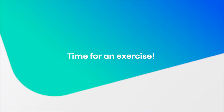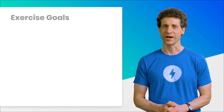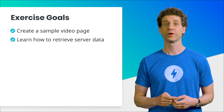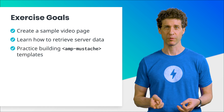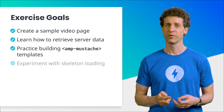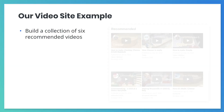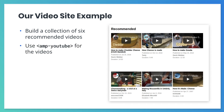To start working with amp-list, let's recreate a typical section of a video site — the recommended video section. In this exercise, we will create a sample video page containing a collection of recommended videos, learn how to retrieve server data using amp-list, and practice building amp-mustache templates. We'll also learn how to use skeleton loading. Our video site example is going to show one group of six recommended videos. We'll use the AMP YouTube component to display them, and while our site is contacting the server to retrieve the data on these videos, we'll use skeleton loading to show the site structure to our users.